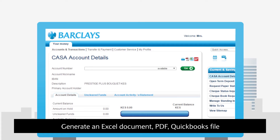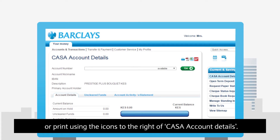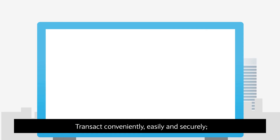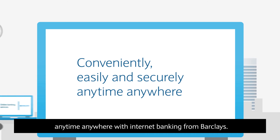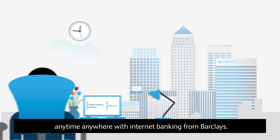Generate an Excel document, PDF, QuickBooks file or print using the icons to the right of CASA account details. Transact conveniently, easily and securely — anytime, anywhere with Internet Banking from Barclays.